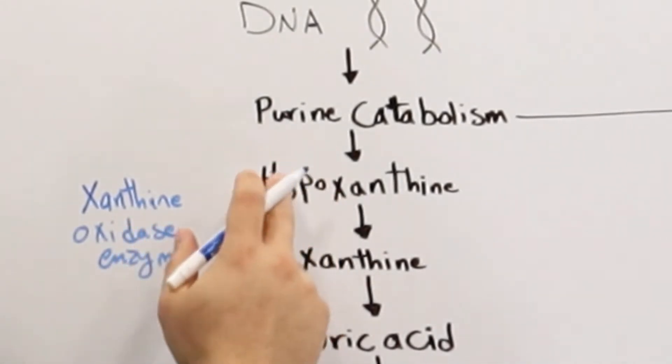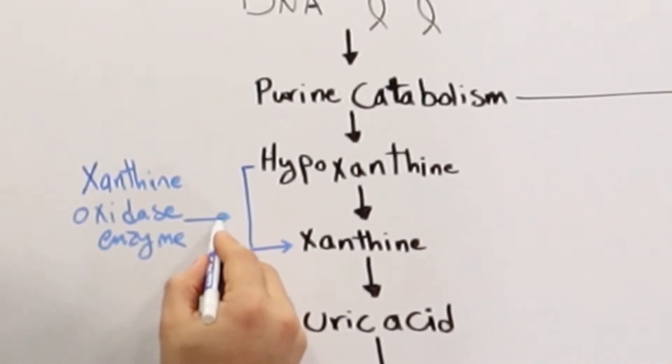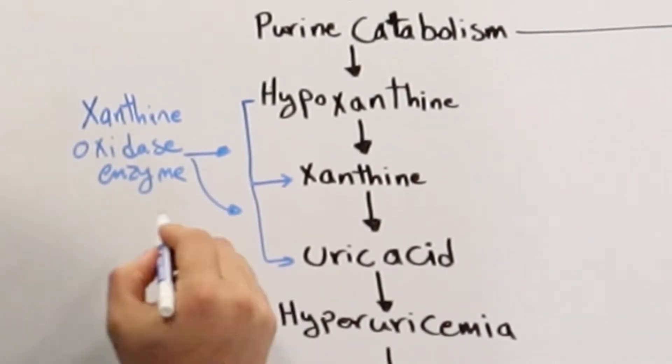Through this enzyme we move from hypoxanthine to xanthine, and it's the same enzyme that converts xanthine to uric acid. So this enzyme works in this step and it works in this step as well.